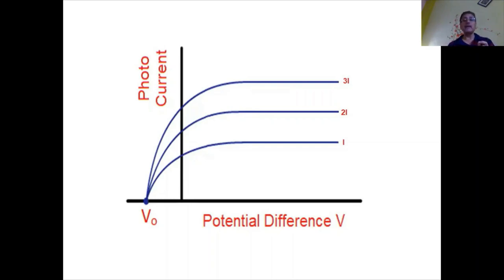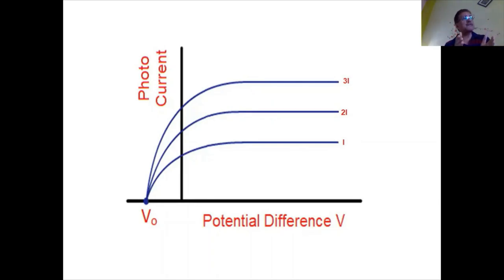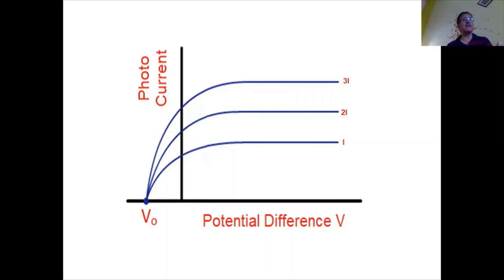For a fixed intensity, the number of photons falling per second is fixed, so the number of electrons coming out is fixed, and after all ejected electrons reach the cathode, there will be no further increase in photocurrent even if we keep increasing the potential difference — this is the saturation effect. The saturation photocurrent increases only if we increase the intensity. If we increase the intensity from I to 2I to 3I, the saturation photocurrent also increases.